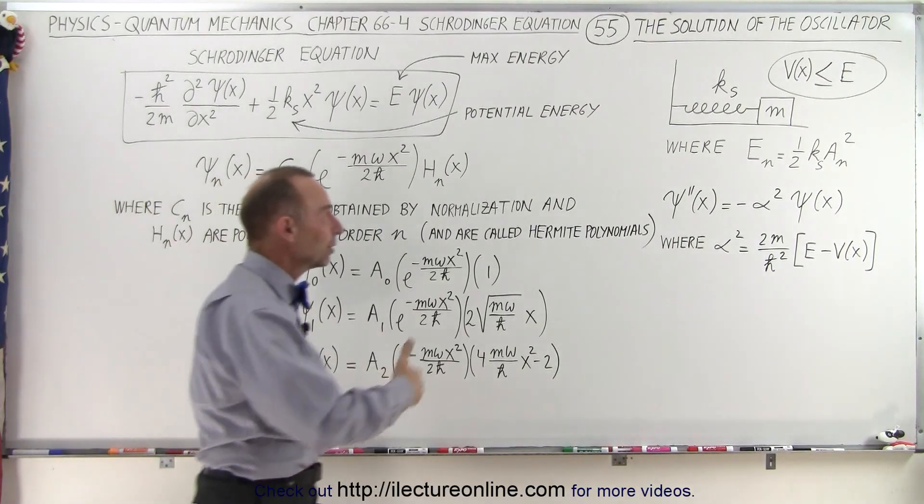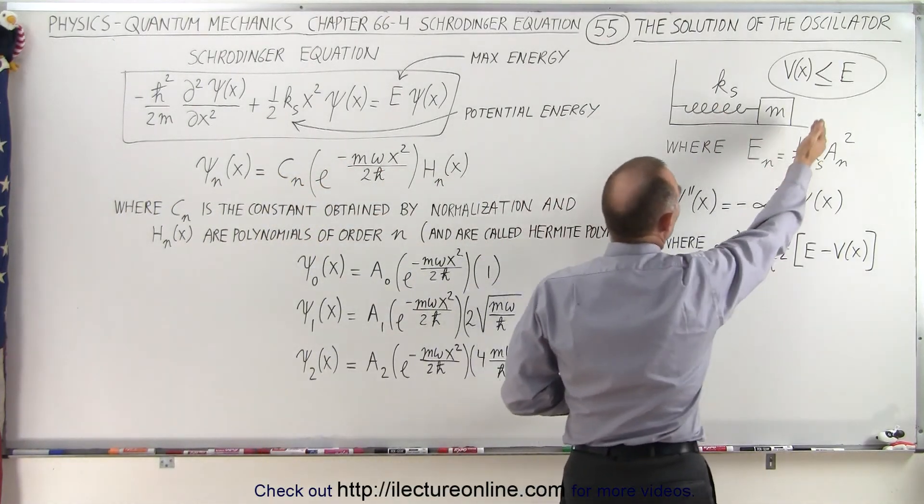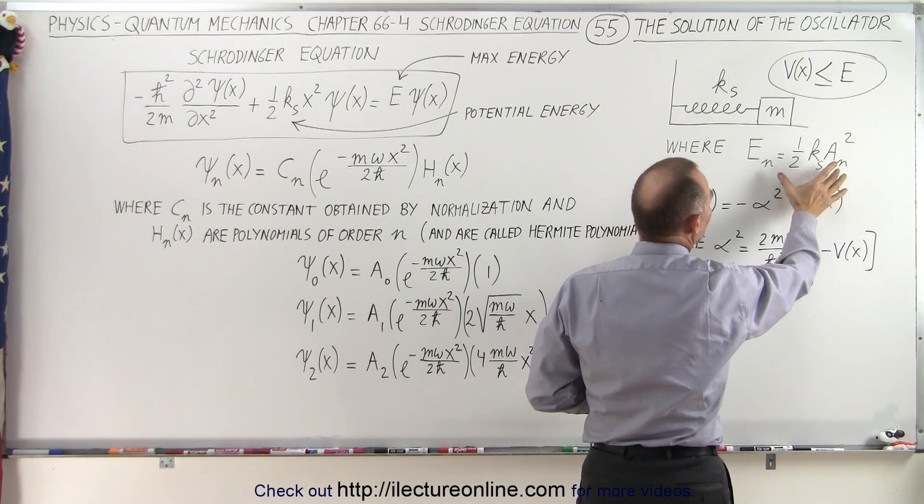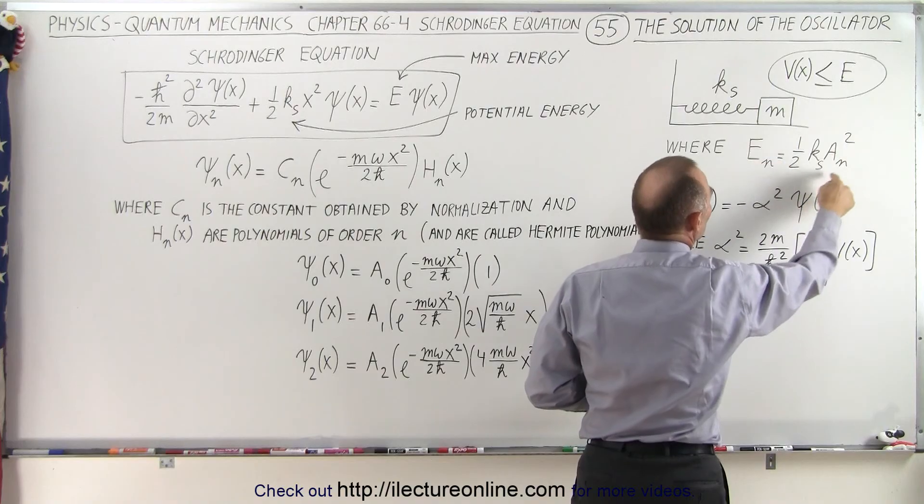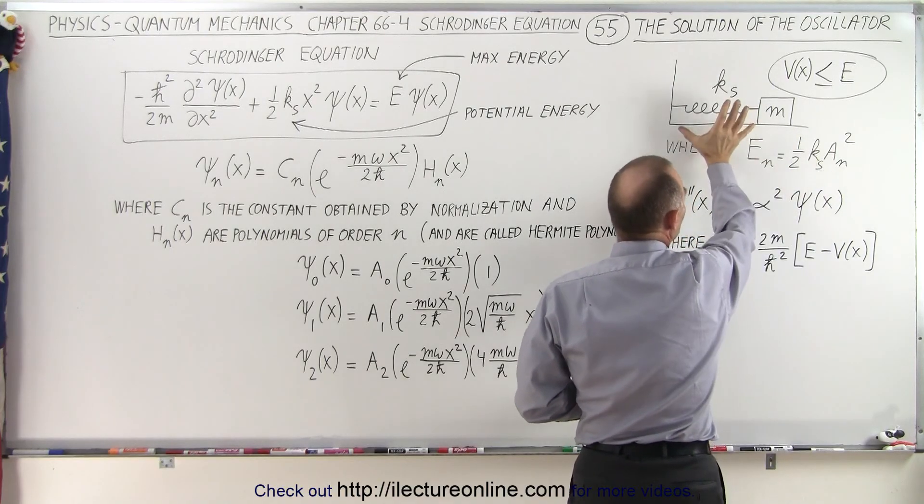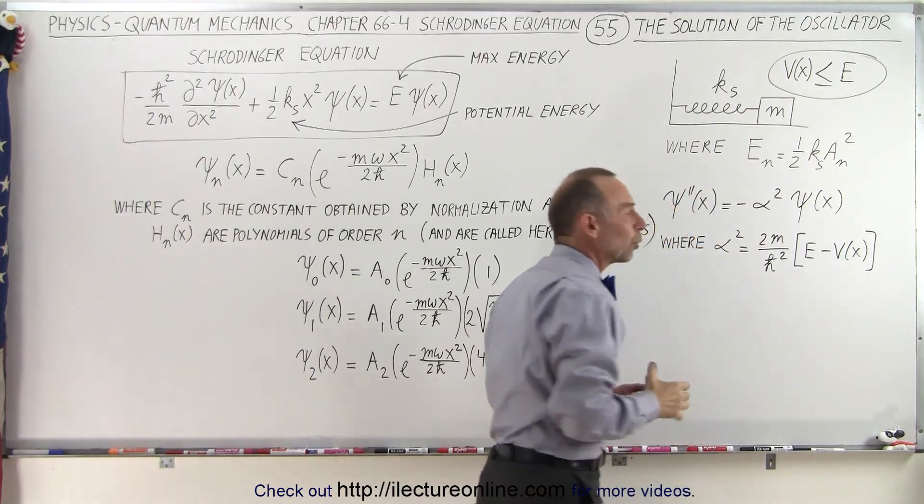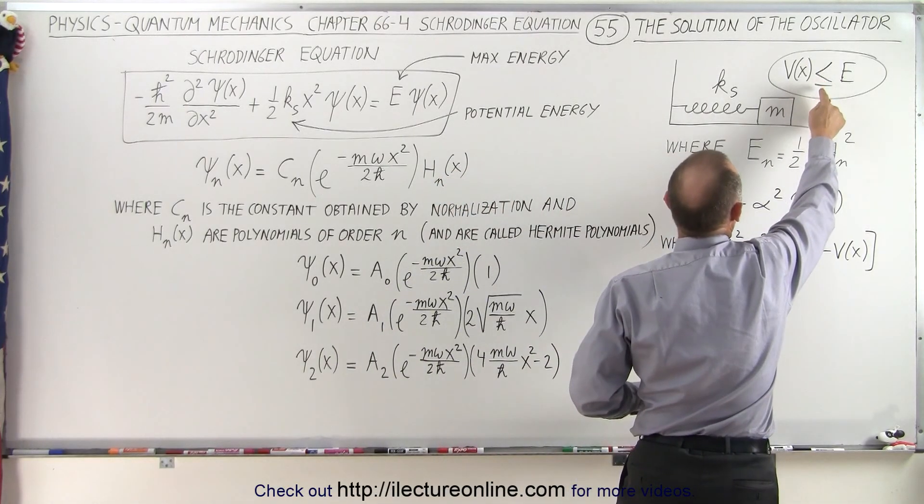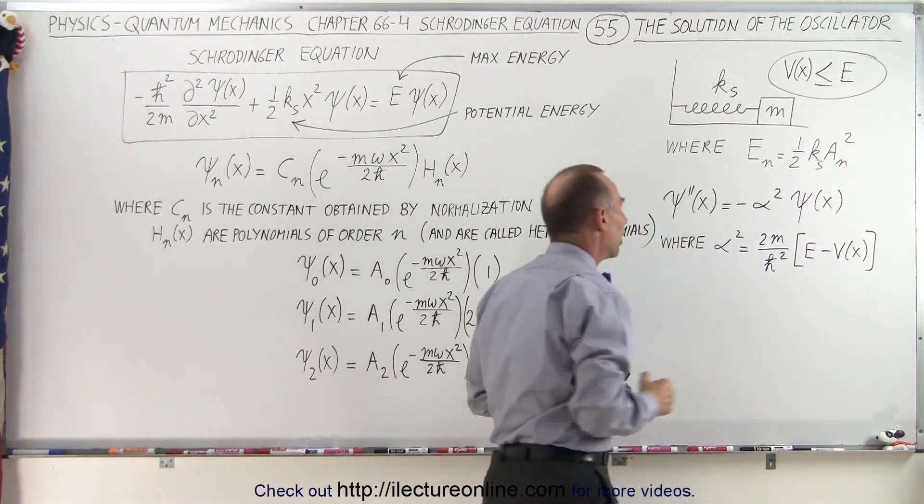We start with the basic premise that we have a potential energy equal to one-half times the spring constant times the amplitude squared. The potential energy at any point in time will be times x squared, such that the potential energy will be smaller than or equal to the total energy of the oscillator.